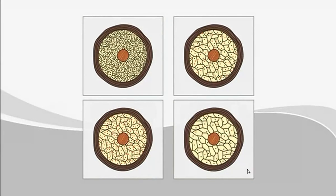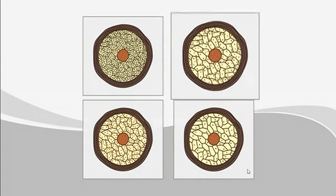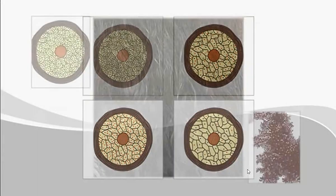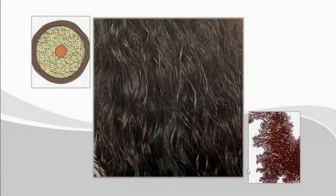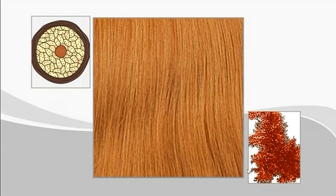It is the type, amount, and distribution of melanin that determines whether hair will be black, brown, red, or blonde. A dense concentration of eumelanin will produce very dark hair. A small amount of eumelanin will produce light blonde hair, while a predominant amount of pheomelanin will create red hair.